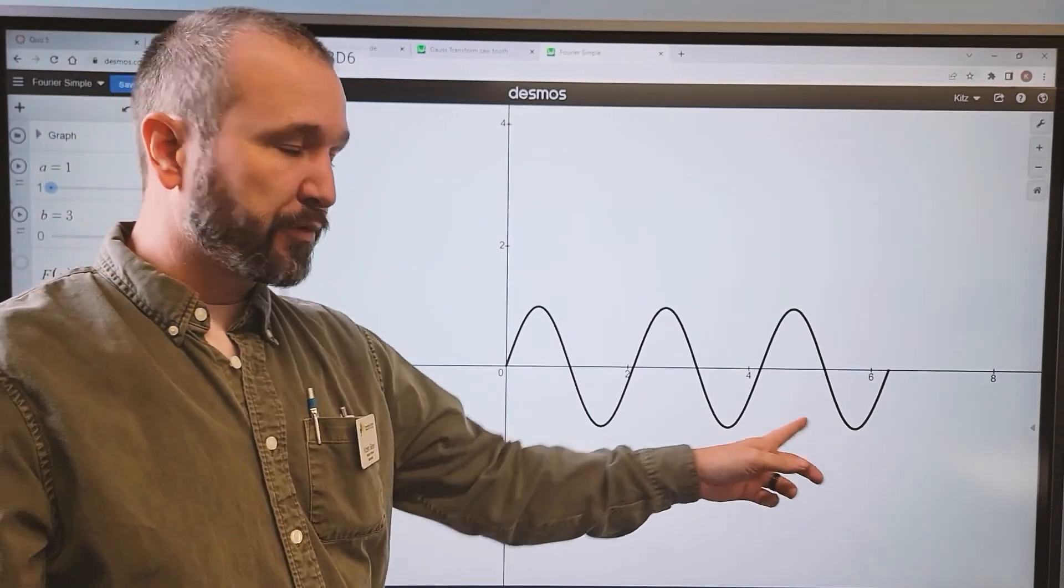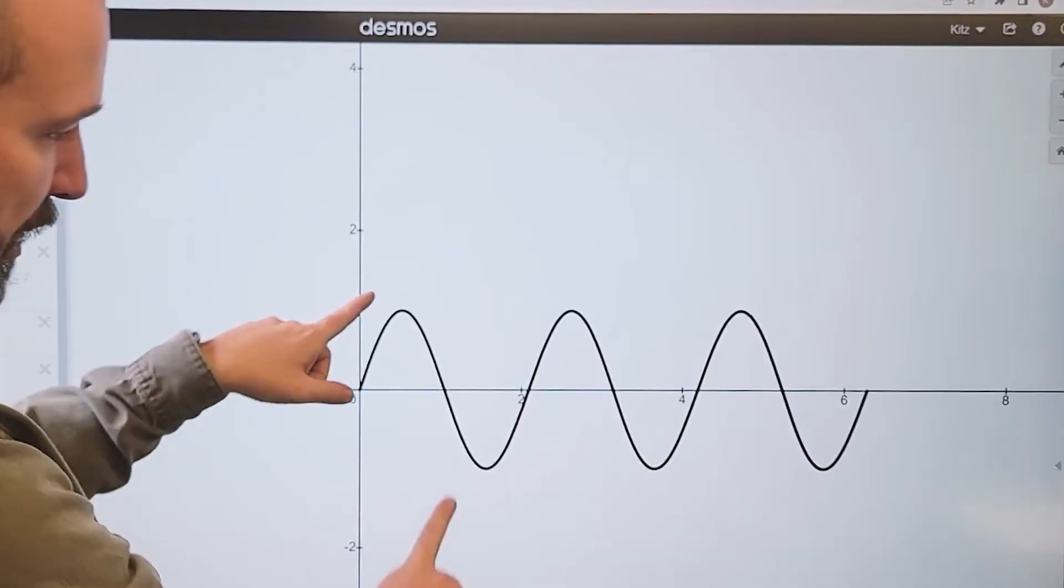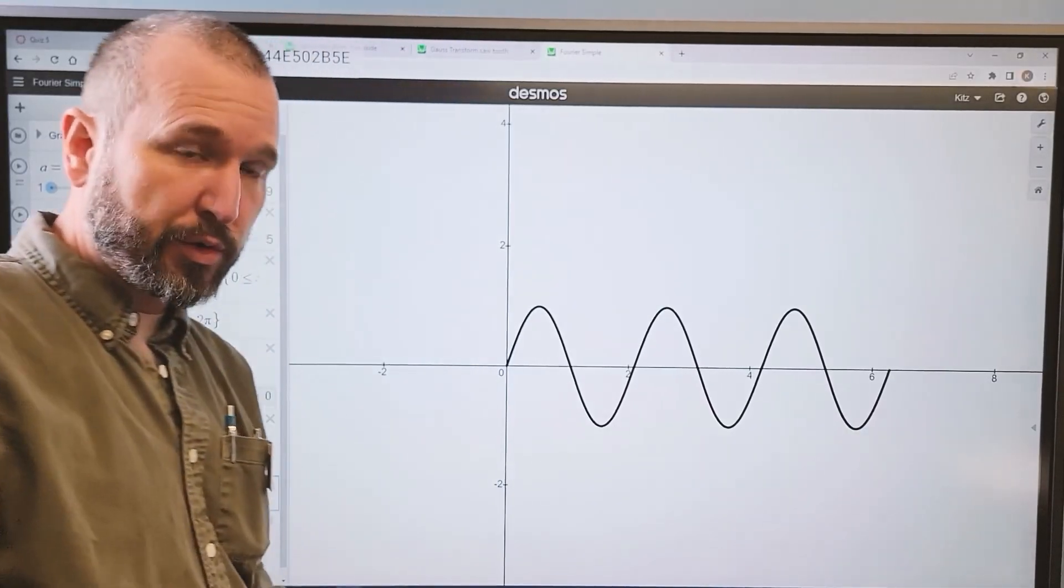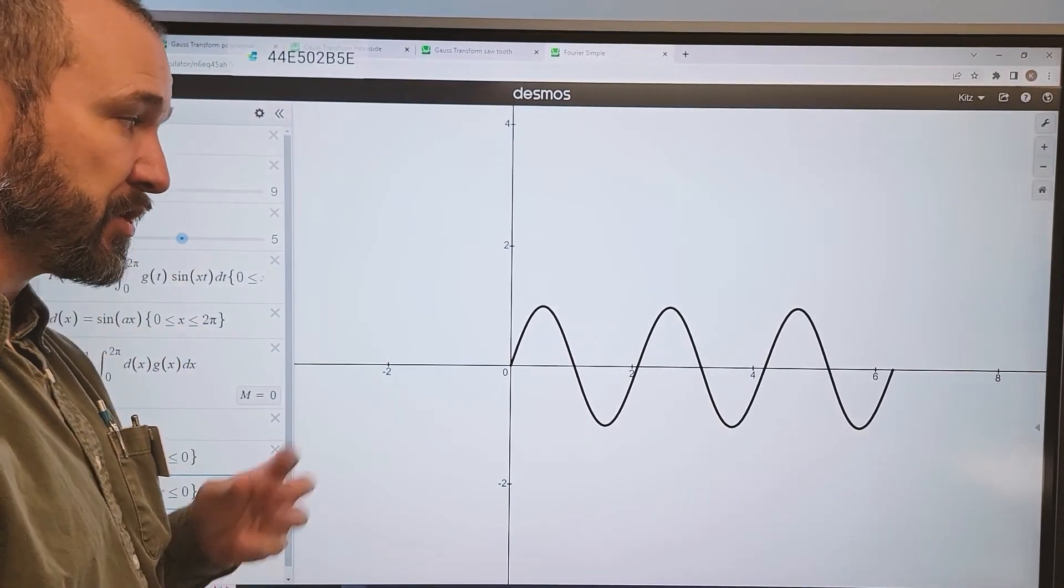Let's look at the original frequency of this wave. So I see one, two, three total waves. So the frequency of this wave is three.